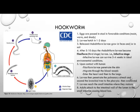Upon contact with a human, the filariform larvae penetrate the skin and migrate through the blood vessels and into the heart and then into the lungs. The larvae penetrate the pulmonary alveoli and descend the bronchial tree to the pharynx where they are swallowed. Once they reach the small intestine, they mature and the adults attach to the intestinal wall of the lumen in the small intestine, causing blood loss.